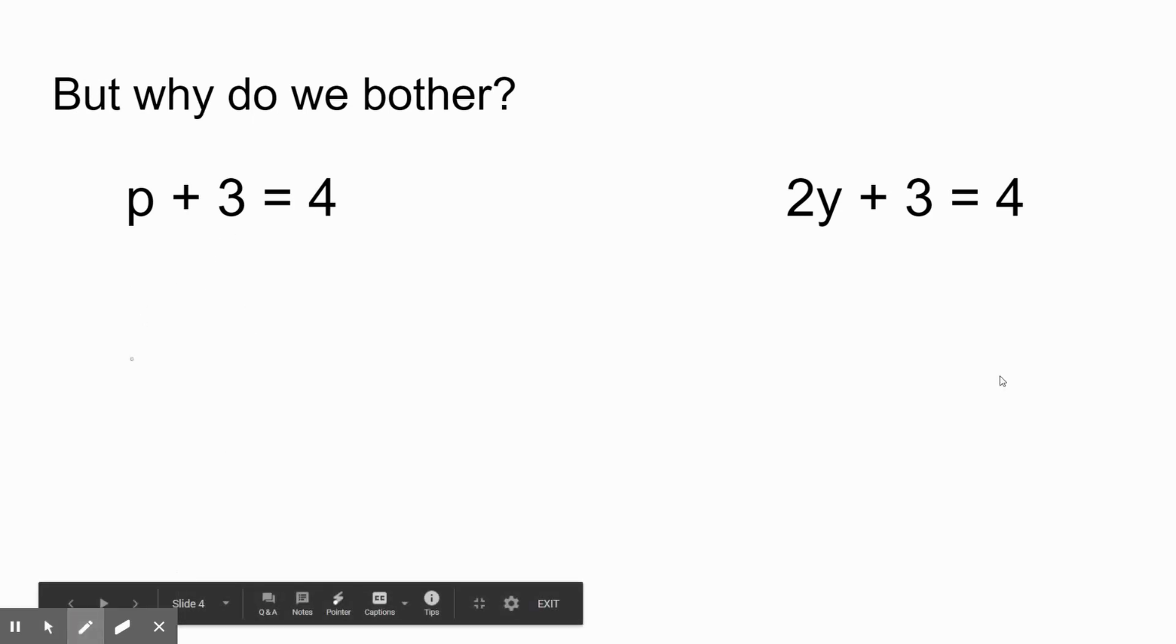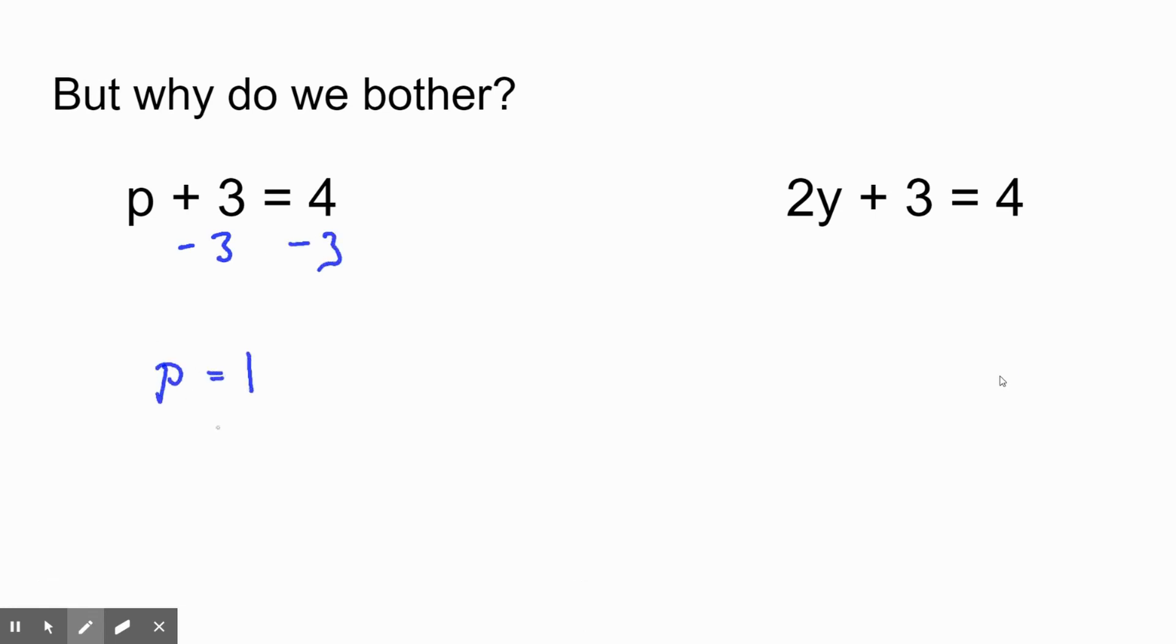So why do we even bother doing it through this method? This first example is just the same thing. Previously, we subtracted 3 from both sides, and we got p was equal to 1. And again, we could do that just by looking at it. We could say, well, what plus 3 equals 4 has to be a 1. 1 plus 3 equals 4, so p must equal 1. Where you run into problems is when you get to something harder like this. And we won't necessarily do anything like that unless it's a challenge problem. But I do want to show you why we need to know these steps in order to do the harder stuff. In this problem, we want to get y by itself. And you'll notice that we have both multiplication right here and we have addition. So we need to actually do two different things.